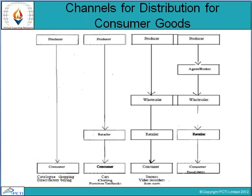For consumer goods, the channels include: producer directly to consumer (catalog shopping, direct factory buying); producer to retailer to consumer (cars, clothing, furniture, textbooks); producer to wholesaler to retailer to consumer (stereos, video recorders, auto parts); and producer to agent/broker to wholesaler to retailer to consumer, which happens in the case of food items.